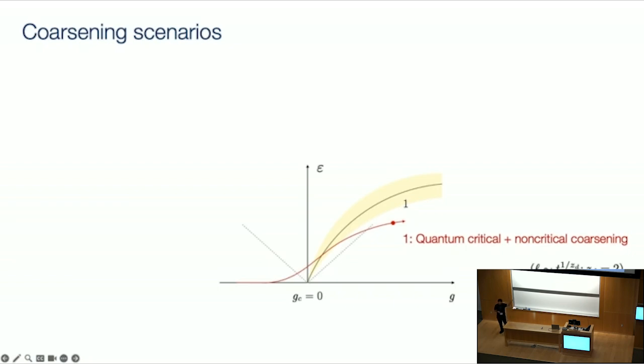So non-critical coarsening is a different flavor of coarsening, where the length scale continues to grow with time as a power law. But the exponent that you see there, zd, that has got nothing to do with the exponent of the quantum critical point. It's got to do with what is conserved, what are the symmetries of the model, and that's what governs those exponents. And crucially, zd is greater than z.